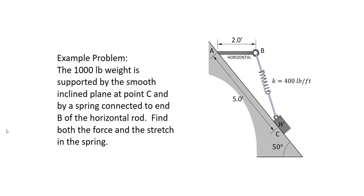From the figure, we also have the spring constant k is 400 pounds per foot. We have the angle of the inclined plane, 50 degrees. We also have the distance from A to B, 2 feet, and A to C, 5 feet.